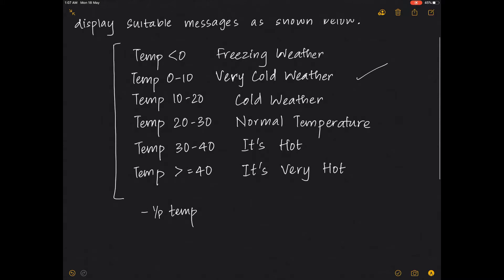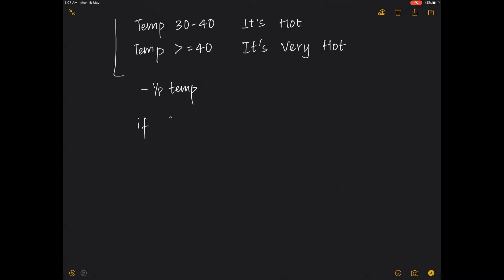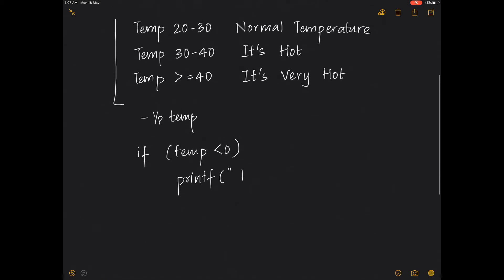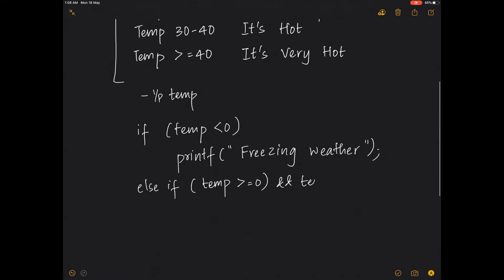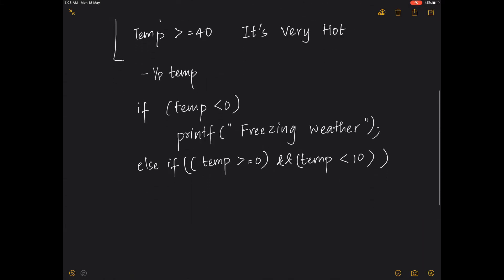You can start by writing: if temperature is less than zero, printf 'freezing weather'. Then else-if: if the temperature is not less than zero, check if it is between zero and 10 — so temperature greater than or equal to zero AND temperature strictly less than 10. In this range, print 'very cold weather'.